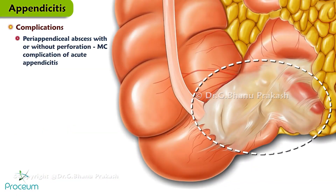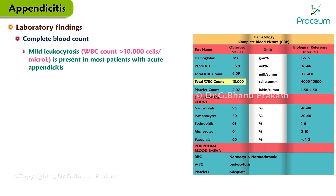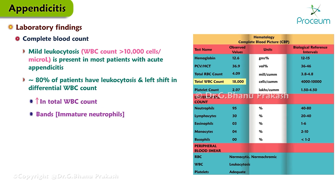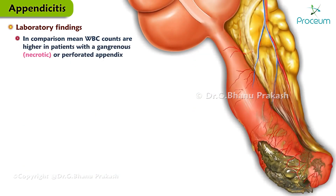Periappendiceal abscess with or without perforation is the most common complication of acute appendicitis. Regarding lab findings, a mild leukocytosis is present in most patients. Approximately 80% of patients have leukocytosis and left shift — an increase in total white blood cell count and bands, which are immature neutrophils. The sensitivity and specificity of an elevated white blood cell count in acute appendicitis are 80% and 55% respectively. Acute appendicitis is unlikely when the white blood cell count is normal, except in the very early course of the illness. Mean white blood cell counts are higher in patients with a gangrenous or perforated appendix.